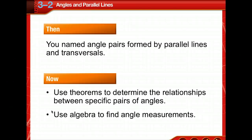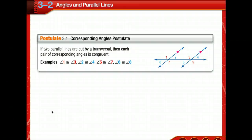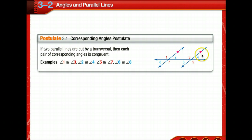There is no new vocabulary in this chapter. The Corresponding Angles Postulate states that if there are two parallel lines — notice they are marked parallel — and they are cut by a transversal, then each pair of corresponding angles is congruent. So angles 1 and 3 are congruent, 2 and 4, 8 and 6, and 7 and 5 — they are all congruent.